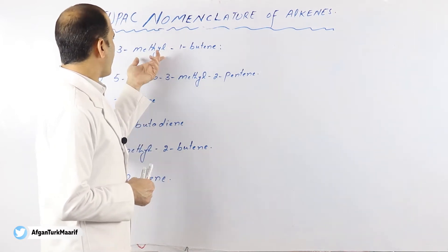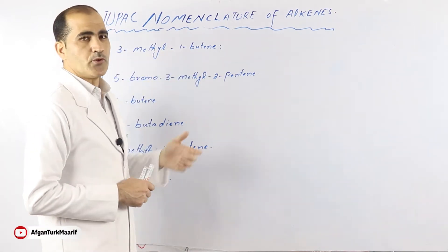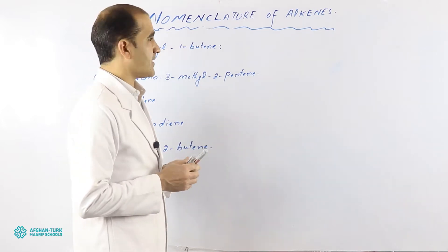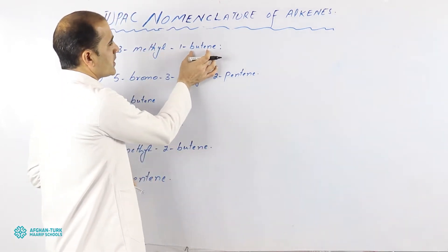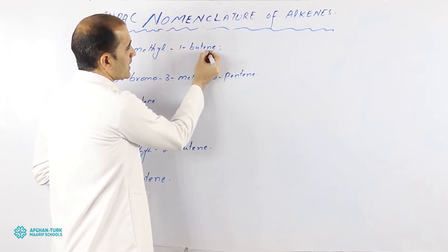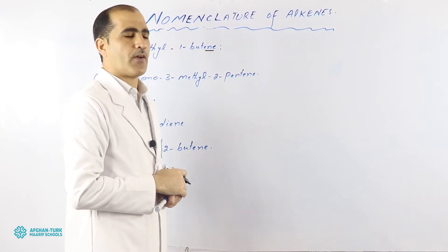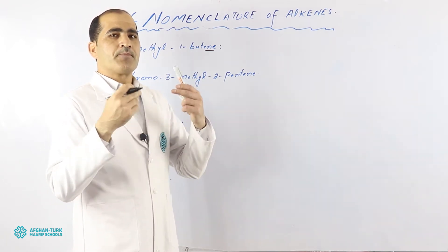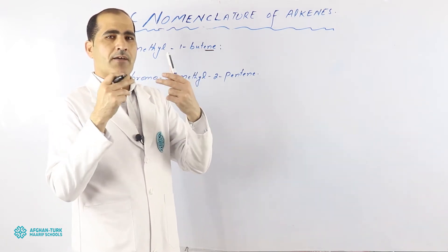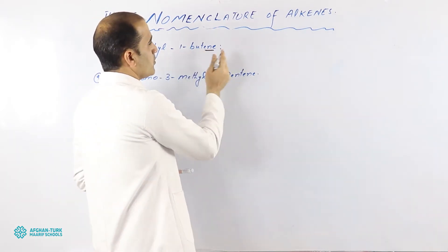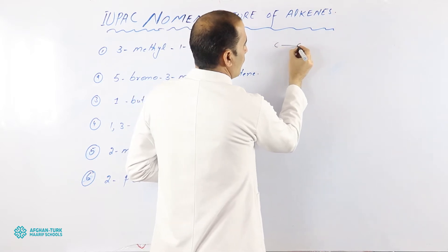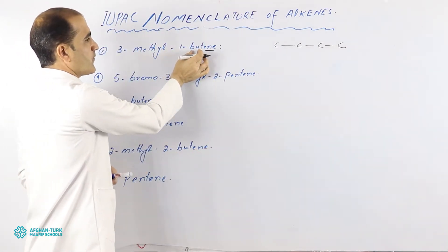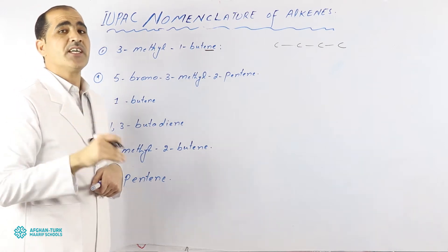I will start with the first simple example: 3-methyl-1-butene. How will you draw the structure formula very easily? First, you should know about 'butene.' We use 'ene' always for a double bond — it belongs to the alkene family. In the alkene family, both carbons have a double bond. 'Butene' means four, so first we draw four carbons: one, two, three, four.